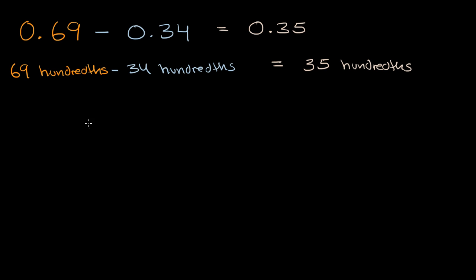Now another way I could think about it is I could break up the tenths and then the leftover hundredths. So I could view this as six tenths minus three tenths, plus nine hundredths minus four hundredths.